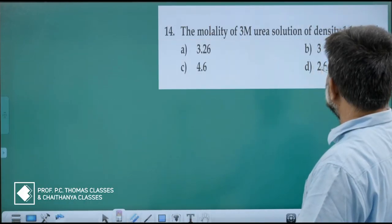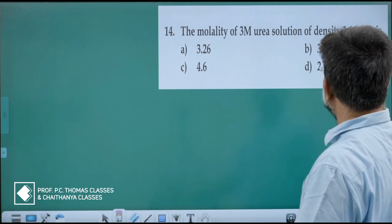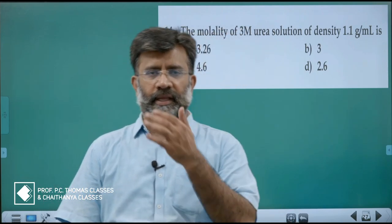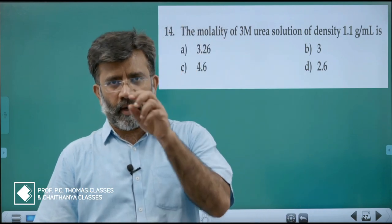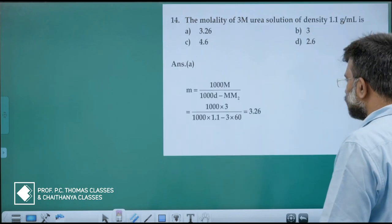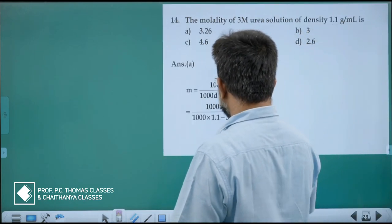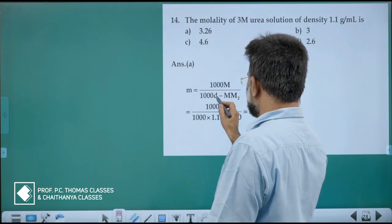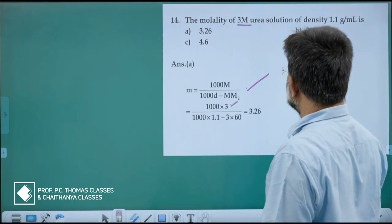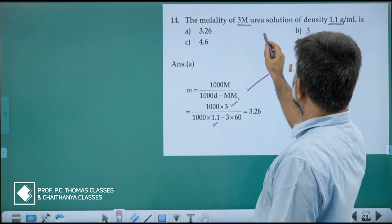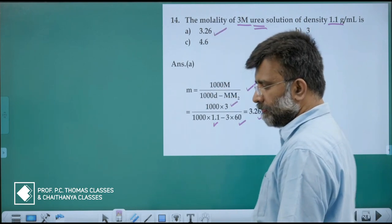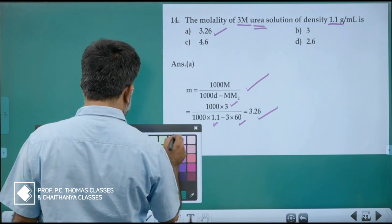Find the molality of a 3 molar urea solution with density 1.1 gram per mL. When molarity and density are given, how do you find molality? You can apply a shortcut equation: molality equals 1000 into molarity divided by (1000 into density minus molarity into molar mass of solute). Molarity is 3, density is 1.1, and molar mass of urea is 60. The answer is option A.